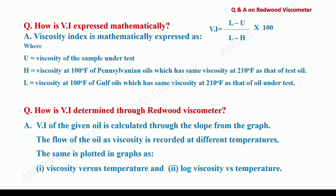How is viscosity index expressed mathematically? It is expressed as (L minus U) divided by (L minus H), multiplied by 100, where U is the viscosity of the sample under test, and H and L are the viscosities of Pennsylvanian and Gulf oils respectively. How is viscosity index determined through Redwood Viscometer? The viscosity index of the given oil is calculated through the slope from the graph. The flow of the oil is recorded as viscosity at different temperatures and plotted as viscosity versus temperature and log viscosity versus temperature, and the slope is calculated.